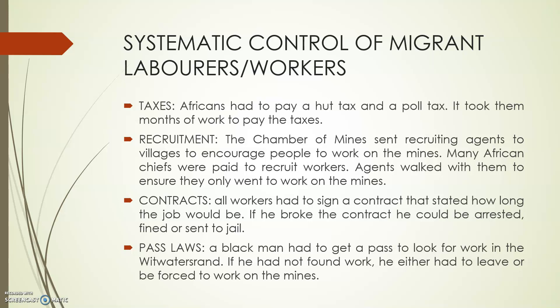The next thing was contracts. If you were a mine worker, you had to sign a contract stating how long the job would be — most of the time at least a year. When working under contract, you were not allowed to leave the mine because people were smuggling out diamonds and gold, so they were put on the compound system. This actually separated families. And if a mine worker wanted to go back home, he could be arrested, fined, or sent to jail for breaking the contract.